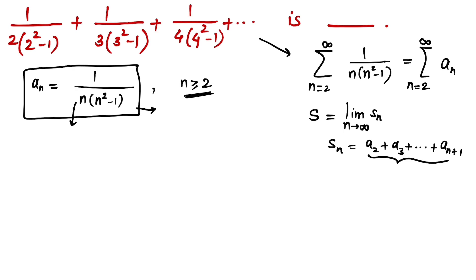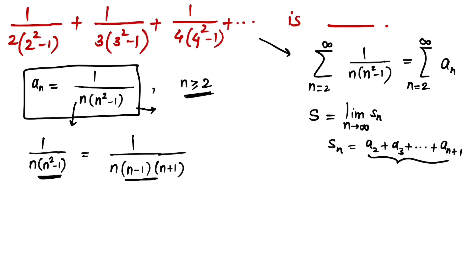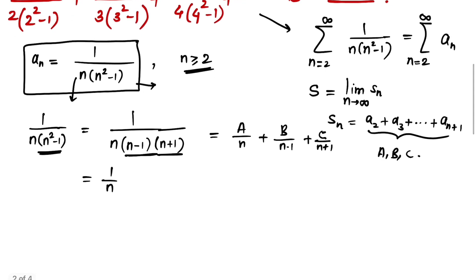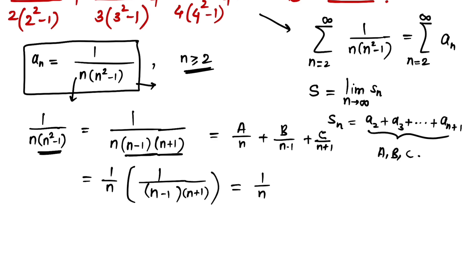We know that 1/(n·(n²-1)) equals 1/(n·(n-1)·(n+1)), because n²-1 = (n-1)(n+1). We can apply A/n + B/(n-1) + C/(n+1) and get the values of A, B, and C. But I have a nice trick: take 1/n common, giving 1/n · 1/((n-1)(n+1)).